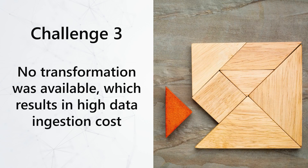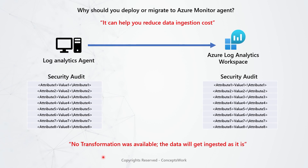Now let's talk about the third challenge, which was related to transformation, and with this challenge I can help you understand how you can save a lot of data ingestion cost. Imagine a scenario where you have a machine with the legacy Log Analytics Agent installed and you want to capture a very specific security event from all machines. This security event has eight different attributes. When using the Log Analytics Agent, this data will be ingested as-is, and practically no transformation can be applied at the agent level. No practical transformation was available with MMA.